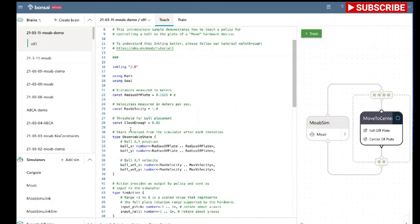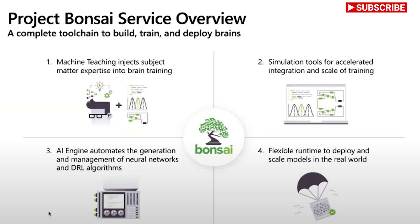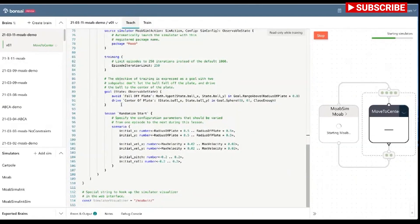What Project Bonsai is, it's actually a complete tool chain enabled to train and build and deploy brains. We can break it up into four separate components that go into it. First, the machine teaching which is where we inject that subject matter expertise into the brain. Then we have the component of simulation, so we have simulation tools which are integrated into the platform so you can scale your training on the cloud. We have the third component which is the AI engine, and that automates the generation and management of neural networks and deep reinforcement learning algorithms.